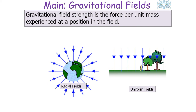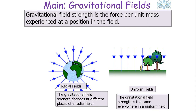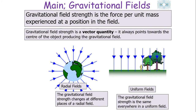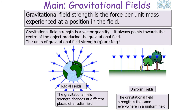Gravitational field strength is the force per unit mass experienced at a position in the field. In a radial field, the gravitational field strength changes in different places, but in a uniform field the gravitational field strength is the same everywhere. Gravitational field strength is a vector quantity — it always points towards the centre of the object producing the gravitational field. Our units of gravitational field strength are newtons per kilogram.